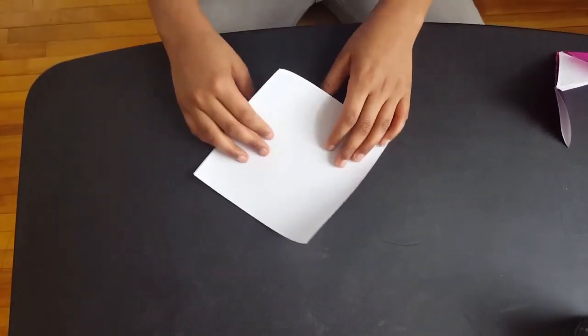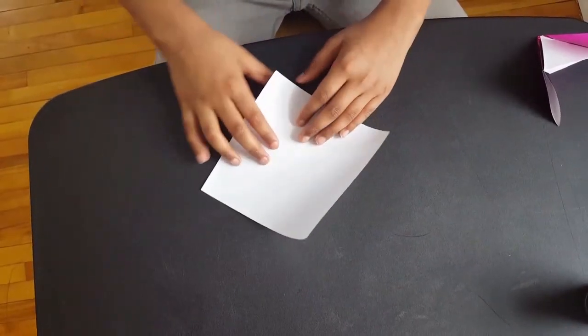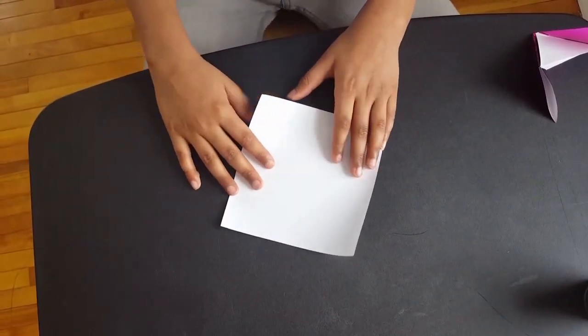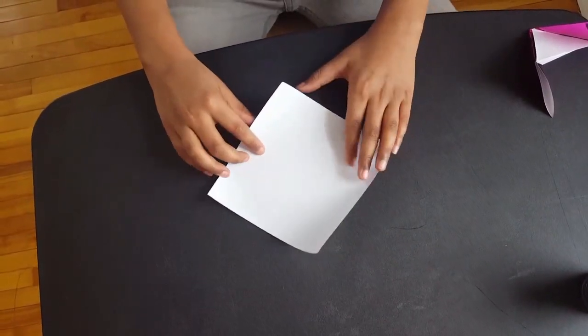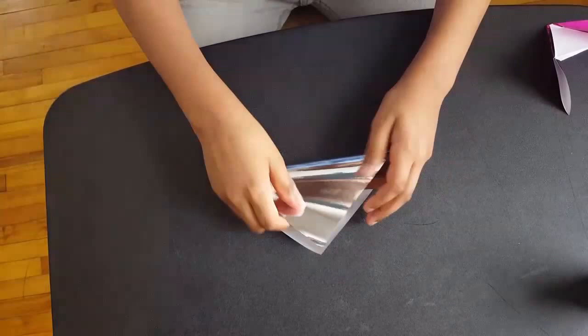So first you have to start with a square piece of paper or cut a piece of blank paper in a square. First you fold it upwards like this.